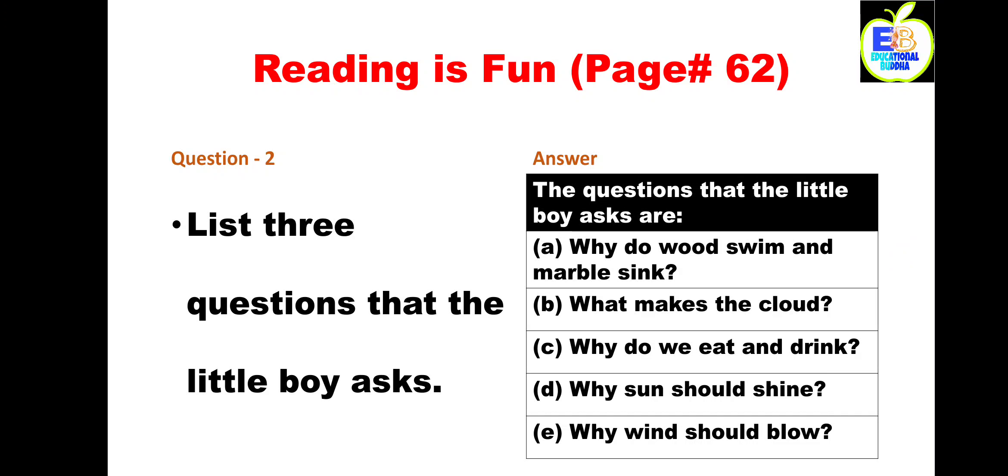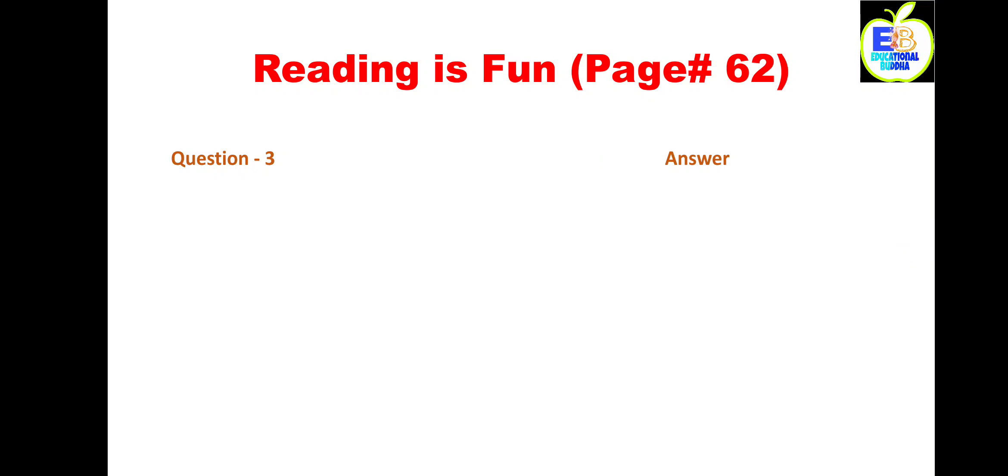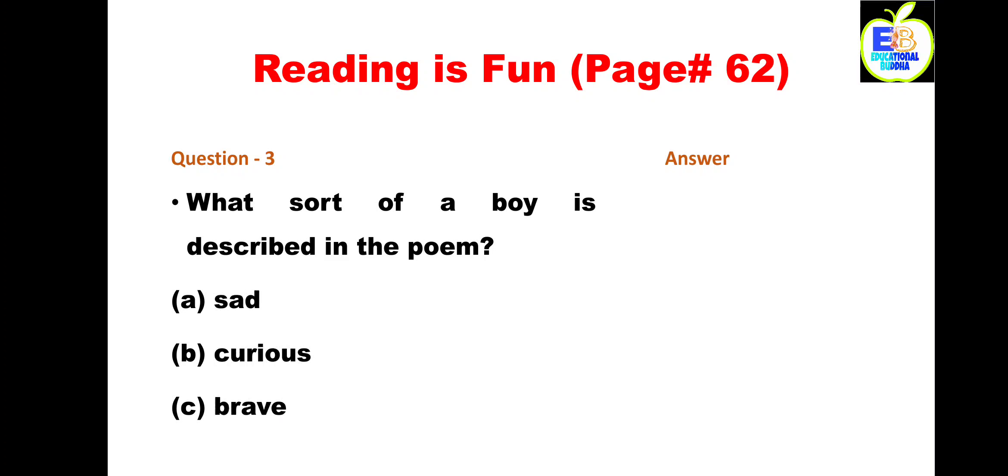Next question, question number three: what sort of a boy is described in the poem? The options are: A) sad, B) curious, C) brave. We can easily understand the answer of this question because the first line of our poem is 'I know a little curious boy.' So the answer is curious.